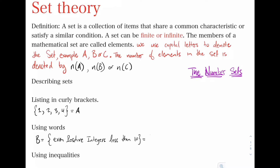Let's see if we could write set B as a list. We would have {2, 4, 6, 8}. So here we see that this is one way to write B using words, and this is another way to write B using a list.